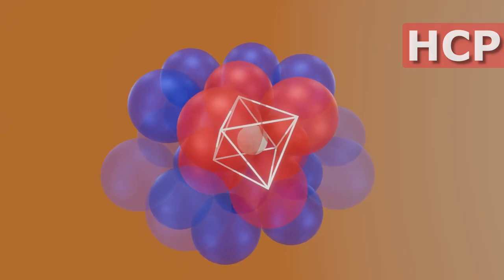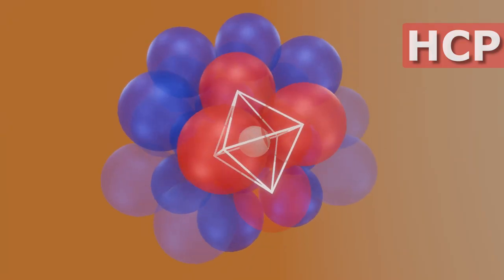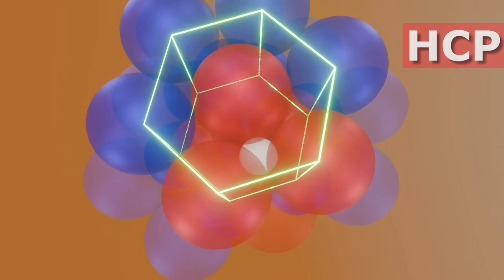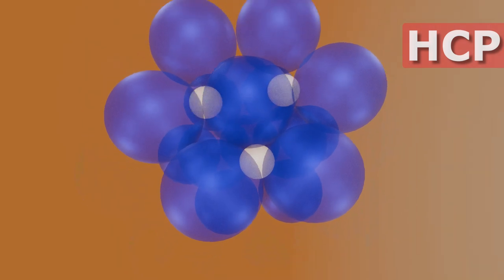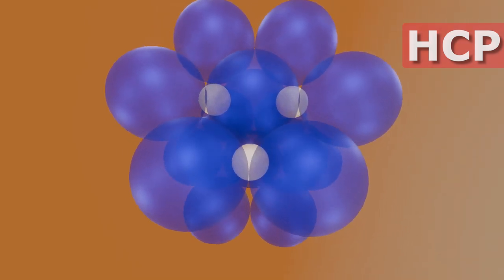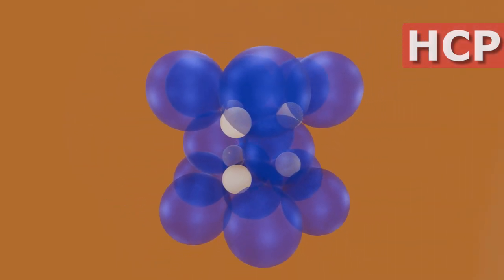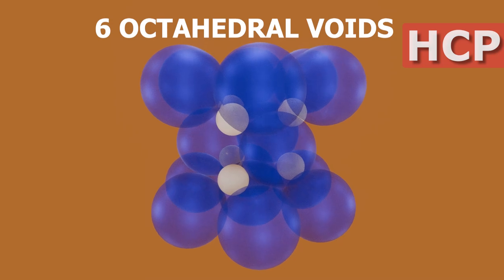Regardless of it being formed using atoms of another cell, the octahedral void still lies completely inside its own cell. Three such voids are located above and symmetrically three below, forming a total of six octahedral voids in HCP.